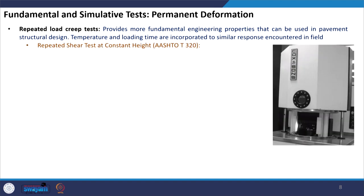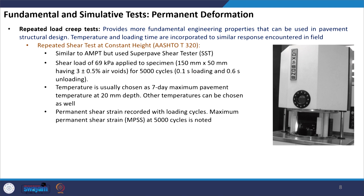Under repeated load creep test we also have the repeated shear test at constant height. This test is almost similar to AMPT but the machine used is a superpave shear tester, and the loading used is a shear load instead of a uniaxial load. We apply a shear load of 69 kPa to the sample prepared at 3 ± 0.5 percent air voids. The loading cycle is 0.1 second of loading with 0.67 second rest period — so you have a loading cycle followed by a rest period, repeated.